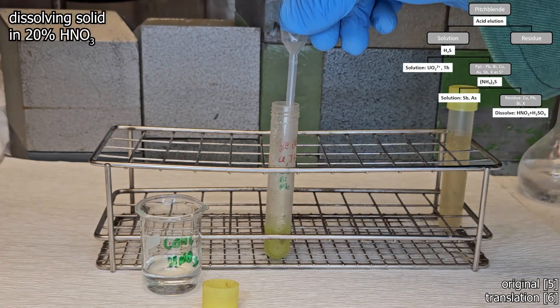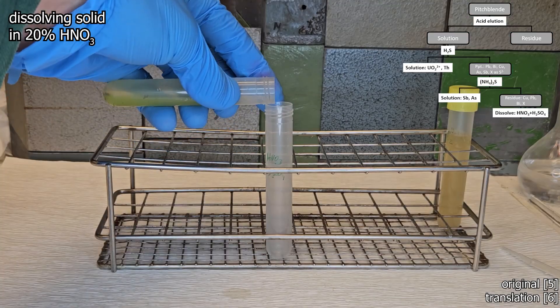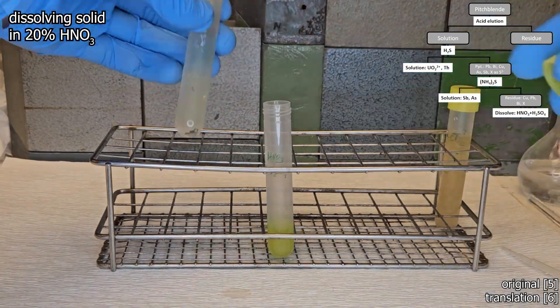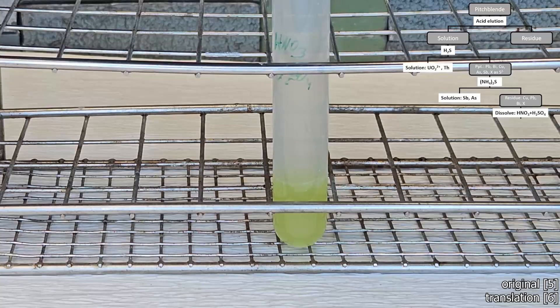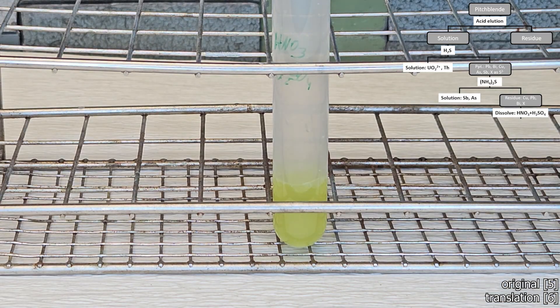The precipitate is dissolved in approximately 20% nitric acid by just shaking it. This converts all the heavy metal ions into a soluble form and once again it stings quite badly.